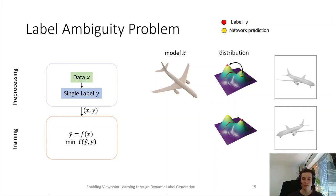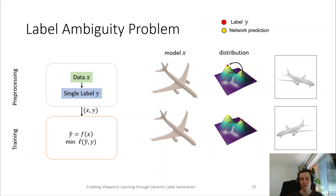Now imagine that we have the same data point twice in our dataset, but we have an inconsistent label decision, as the second model is labeled with a different view. However, as the network receives the identical input, it will make an identical prediction for this model, but it sees a different label and will try to minimize the distance to this label.